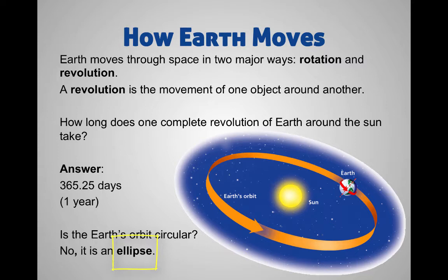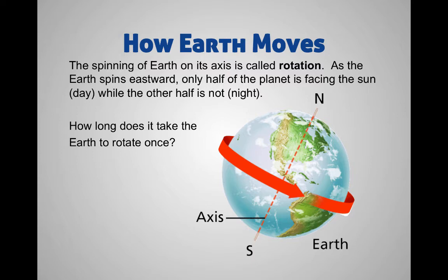It's very, very close to being a circle, but it's slightly elongated. And this has an effect as to how far away we are from the sun — sometimes we're closer, sometimes we're farther away at different points of the year. We'll get to that later.